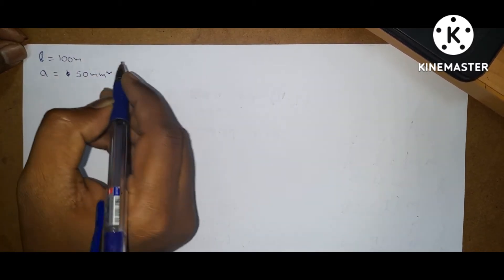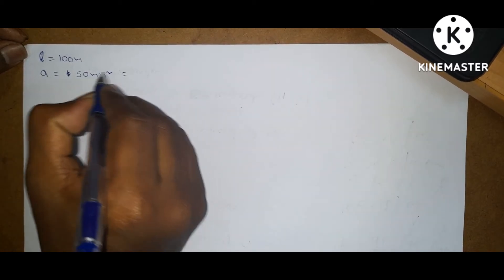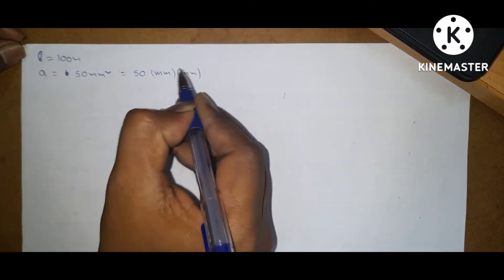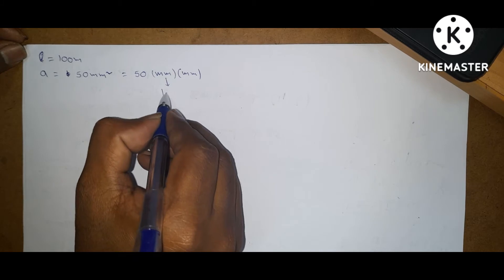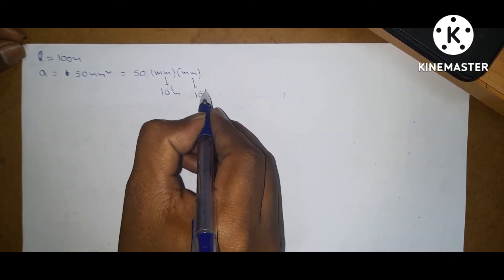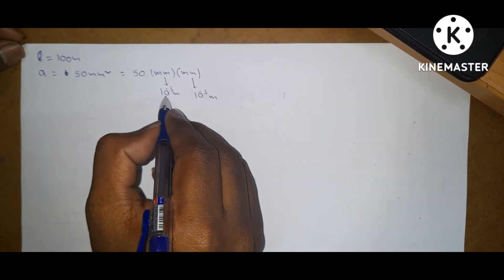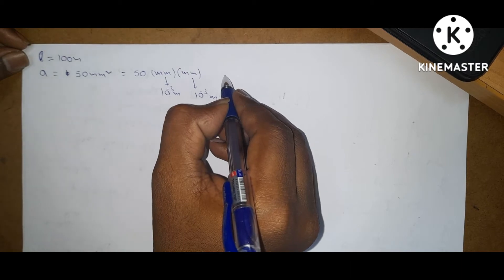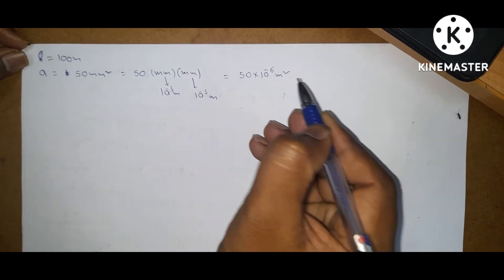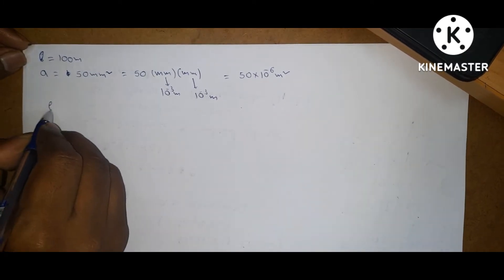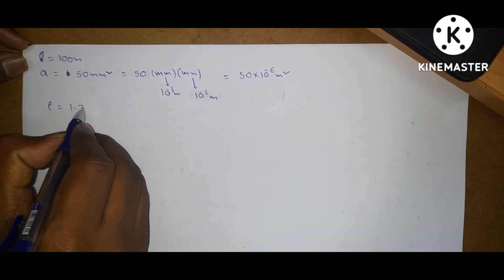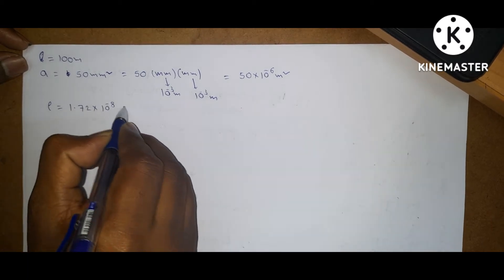Convert the area into meter square. 50 millimeter square can be written as millimeter into millimeter. For 1 millimeter it is 10 power minus 3 meters, so 10 power minus 3 into 10 power minus 3 gives 10 power minus 6. So the area is 50 into 10 power minus 6 meter square. Rho, that is resistivity of copper wire, is 1.72 into 10 power minus 8 ohm meter.